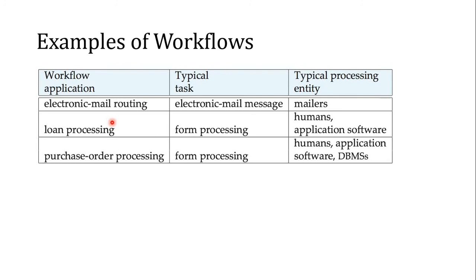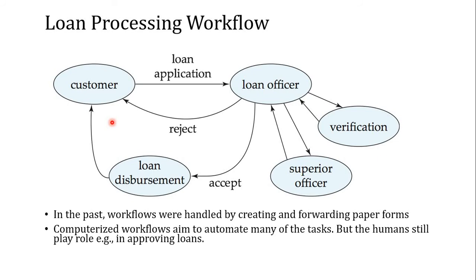Examples of transactional workflow include electronic mail — routing and processing email messages through mailers — and loan processing, which involves form processing. To take a loan you process a bank form and then proceed through the typical transaction entry steps. These are important to understand. For instance, if you want to transfer money from one account to another, or make an online payment to a store such as Chaldal using your bKash account, your bKash account needs to be authorized to send the payment and the Chaldal account must be authorized to receive it. These are totally different servers that must communicate.